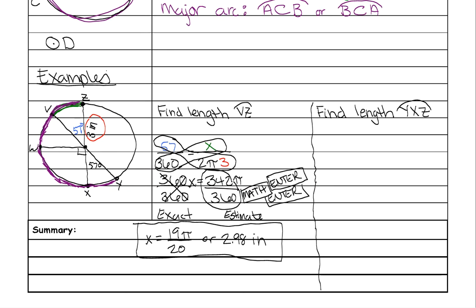Okay, so first we need to figure out how many degrees that whole arc is. So since this is 57, this is 57, this is 90, we need to figure out what VW is.